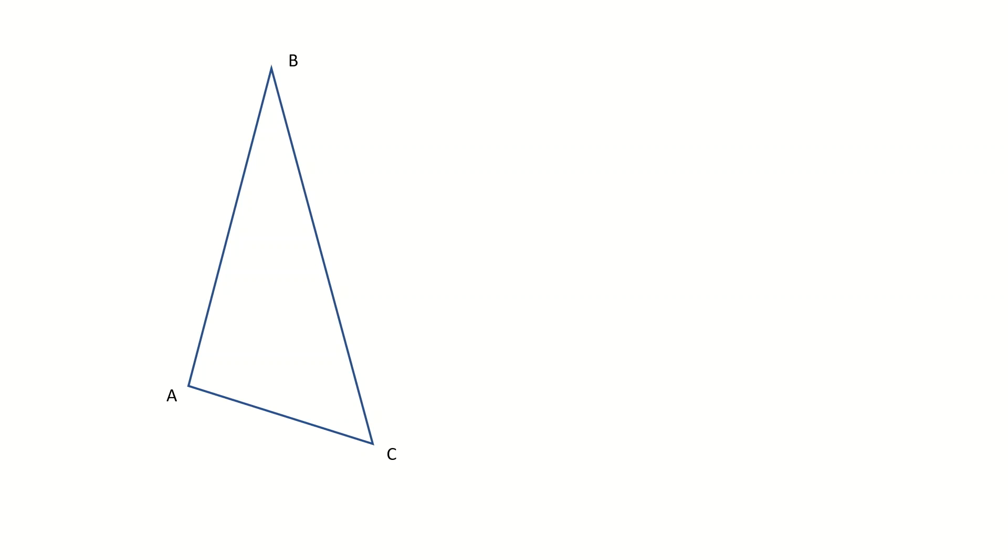One way to solve a problem like this is to see if we can change it to a simpler case, a special case. For example, let's say we have an isosceles triangle instead of ABC. Let's say we have a triangle which is symmetric and has two equal sides like this. Of course in this case, because it's symmetric, the segment in the middle is going to be parallel to the base, and the solution is going to be something like this.